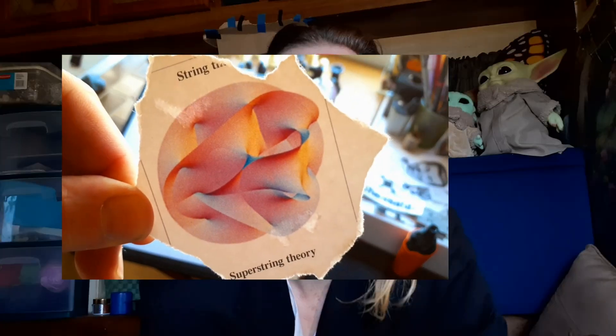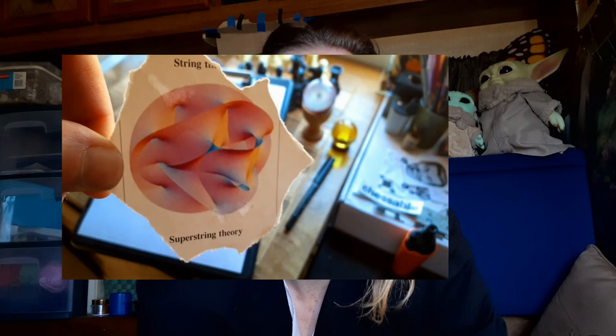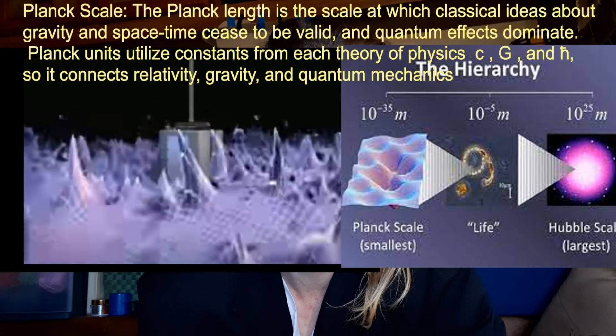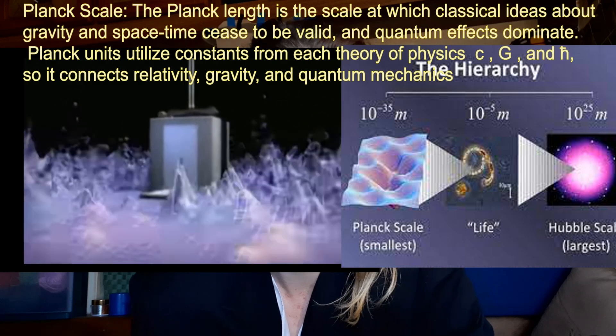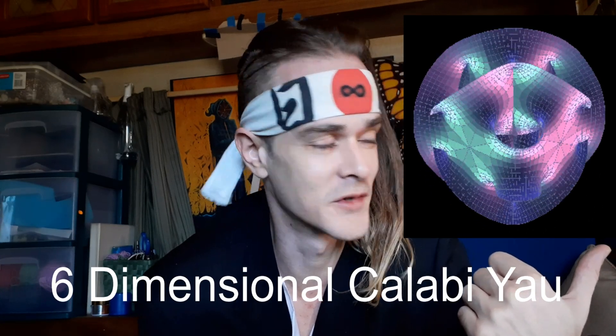Hey guys, today I'm going to draw a quick Calabi-Yau manifold from Superstring Theory. It's a six-dimensional object that's supposed to describe the fundamental structure of the Planck scale in quantum gravity according to Superstring Theory. I'll show an animation here, not a simulation.